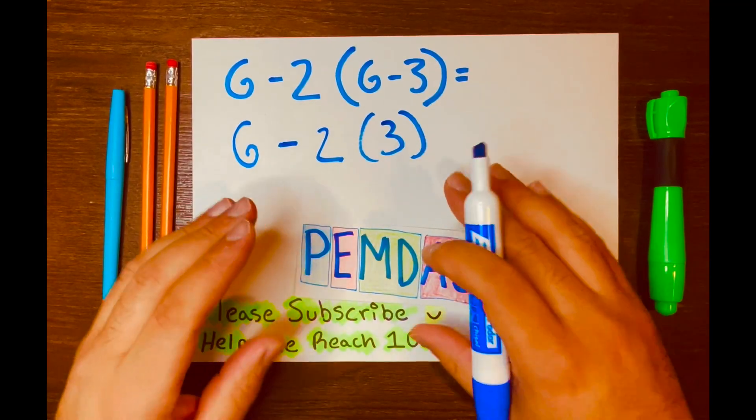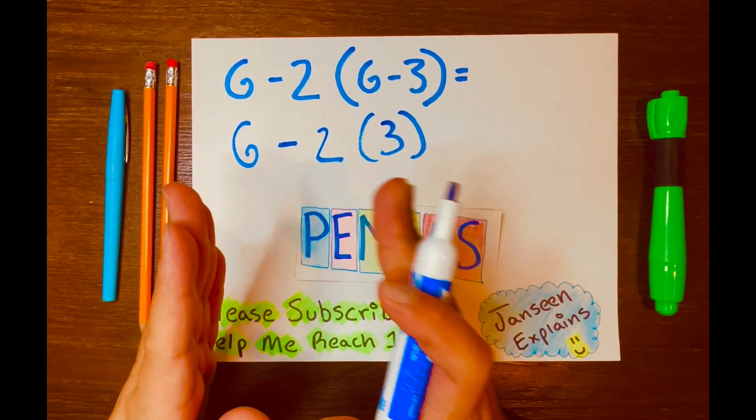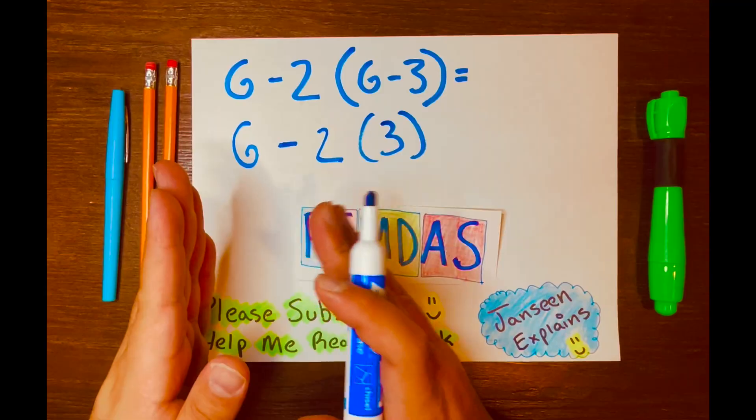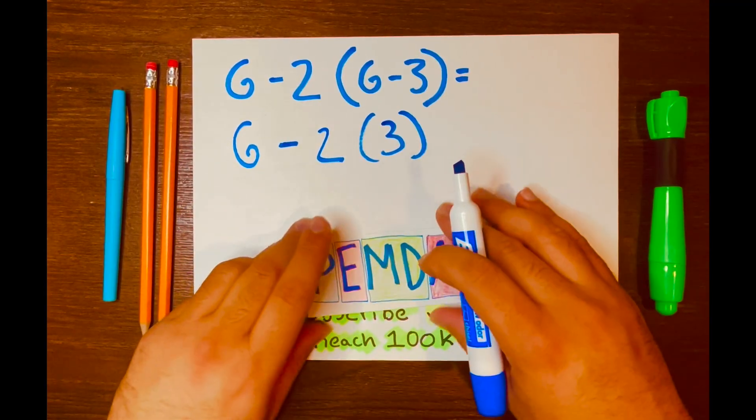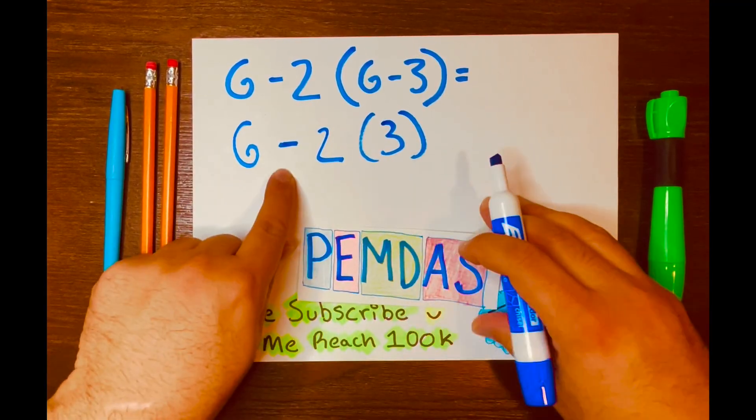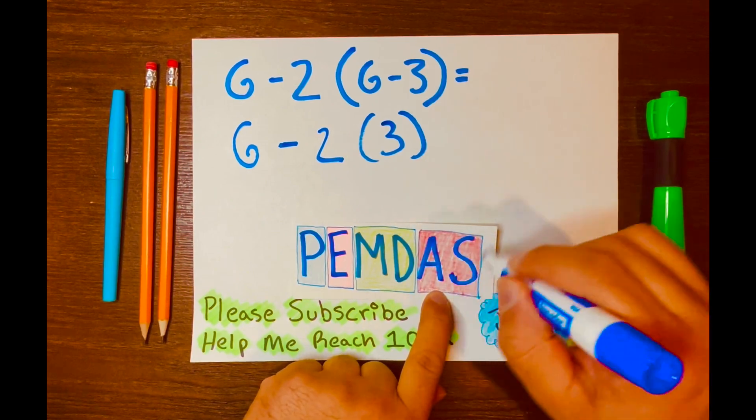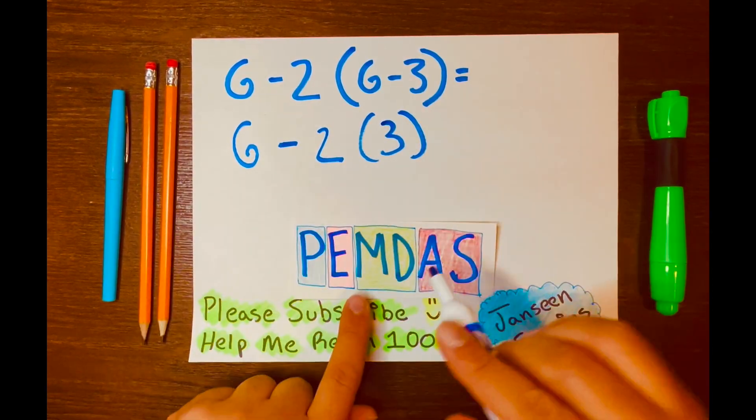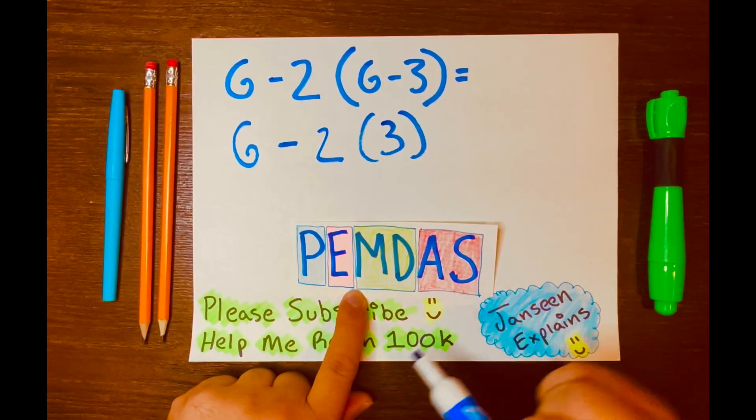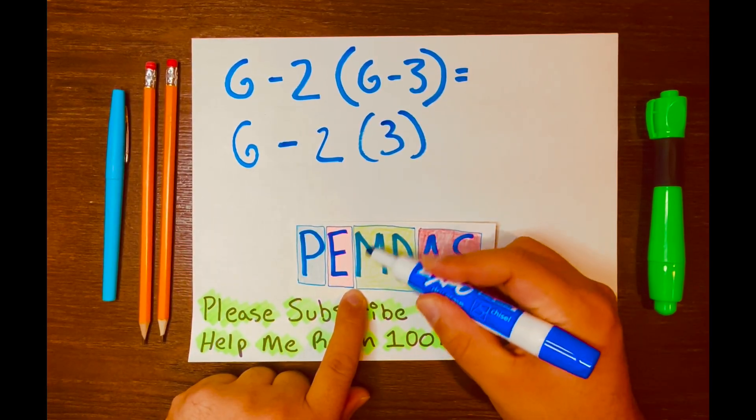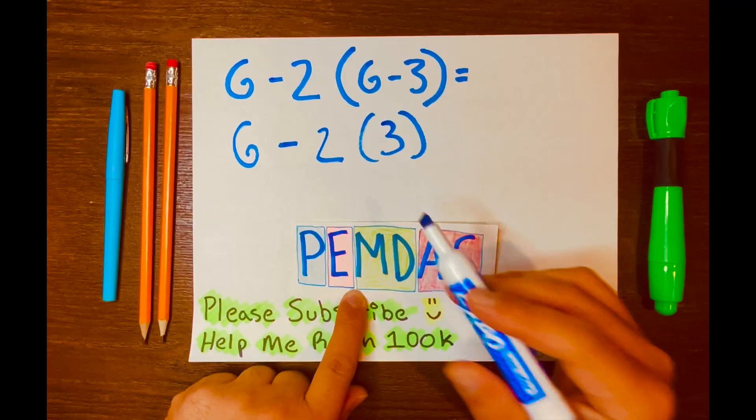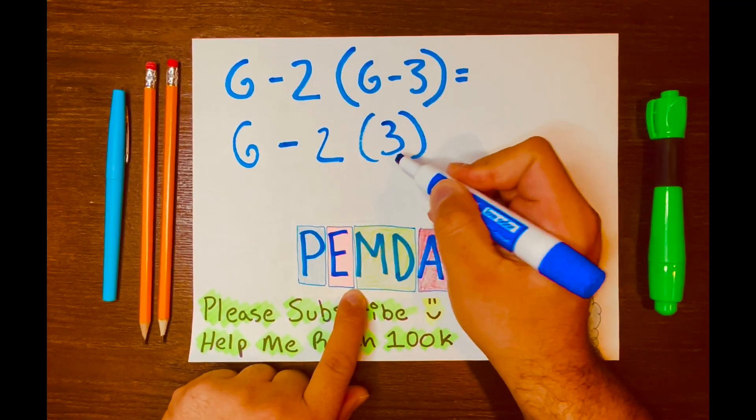Now remember, you are solving this math problem from left to right according to PEMDAS. Subtraction is at the lower level, and multiplication is above that level. You do see the M. That is multiplication. So 2 times 3 will go first.